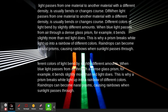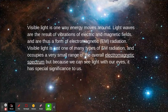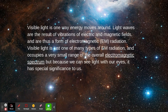Raindrops can become like natural prisms, causing rainbows when sunlight passes through. Visible light is one way energy moves around. Light waves are the result of vibrations of electric and magnetic fields and are thus a form of electromagnetic EM radiation.